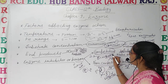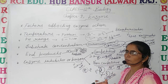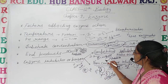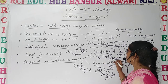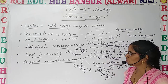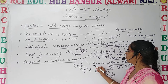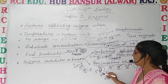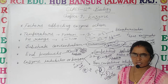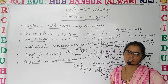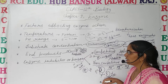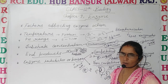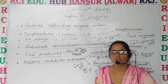In competitive inhibition, the inhibitor has the same shape as the substrate and binds with the active site; we counter it by increasing the concentration of the substrate. These are the factors which affect enzyme action.